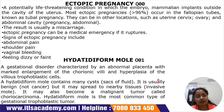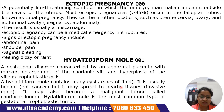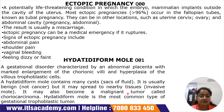The next important condition is hydatidiform mole, which corresponds to code O01. It is a gestational disorder characterized by an abnormal placenta with marked enlargement of the chorionic villi and hyperplasia of the villous trophoblastic cells. It contains many cysts — sacs of fluid — and is usually benign, but it may spread to nearby tissues and become cancerous, known as an invasive mole. It may also become a malignant tumor called choriocarcinoma, and it is the most common type of gestational trophoblastic tumor.